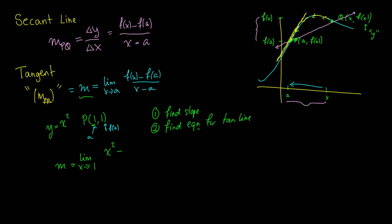So we have the limit as x approaches 1 of x² minus 1 over x minus 1. We can factor the numerator: (x minus 1)(x plus 1) all over (x minus 1). The (x minus 1) terms cancel and we get the limit as x goes to 1 of x + 1, which equals 2. So our slope m = 2.